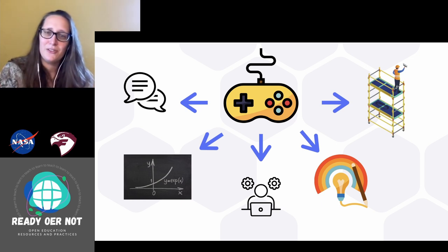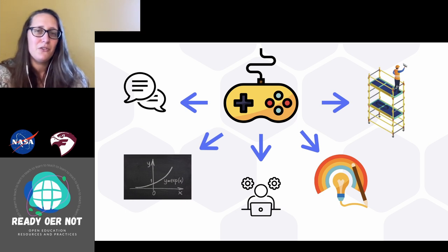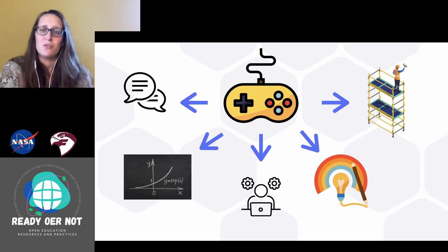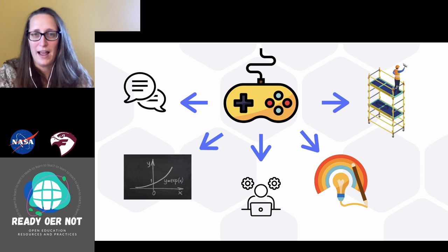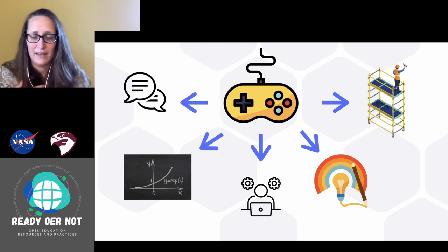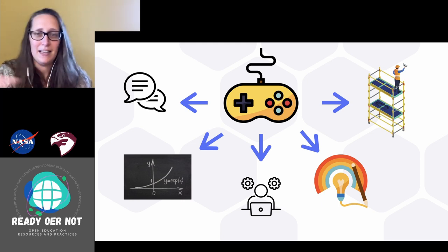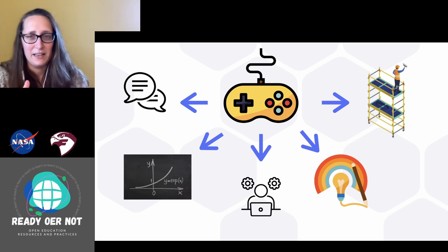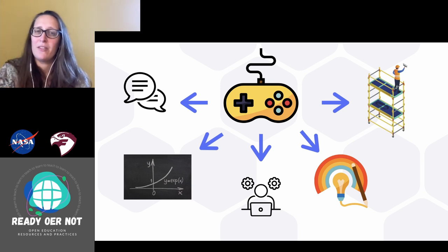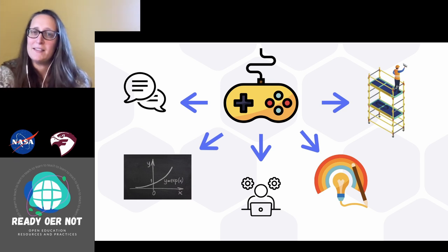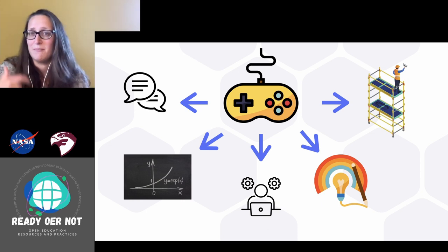There are usually multiple ways to solve things in games — a brute force option where you just try to get through it, or you can strategize and find alternate ways through. That ties back to literacy: sometimes kids are reading manuals and walkthroughs and guides to help with that. That kind of divergent thinking — there are multiple ways I can solve this problem and I'm going to pick one that fits well with my strengths and interests as a gamer — is a cool one.